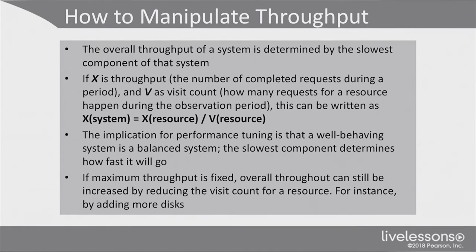Now let's talk about throughput. The overall throughput of a system is determined by the slowest component of that system. It doesn't make sense optimizing your CPU or memory performance a lot if the bottleneck is in the hard disk, because the hard disk is the slowest component. In the formula, if x is the throughput — the number of completed requests during a period — and v is visit count, which is how many requests for a resource happen during the observation period, then xSystem equals xResource divided by vResource. A well-behaving system is a balanced system.